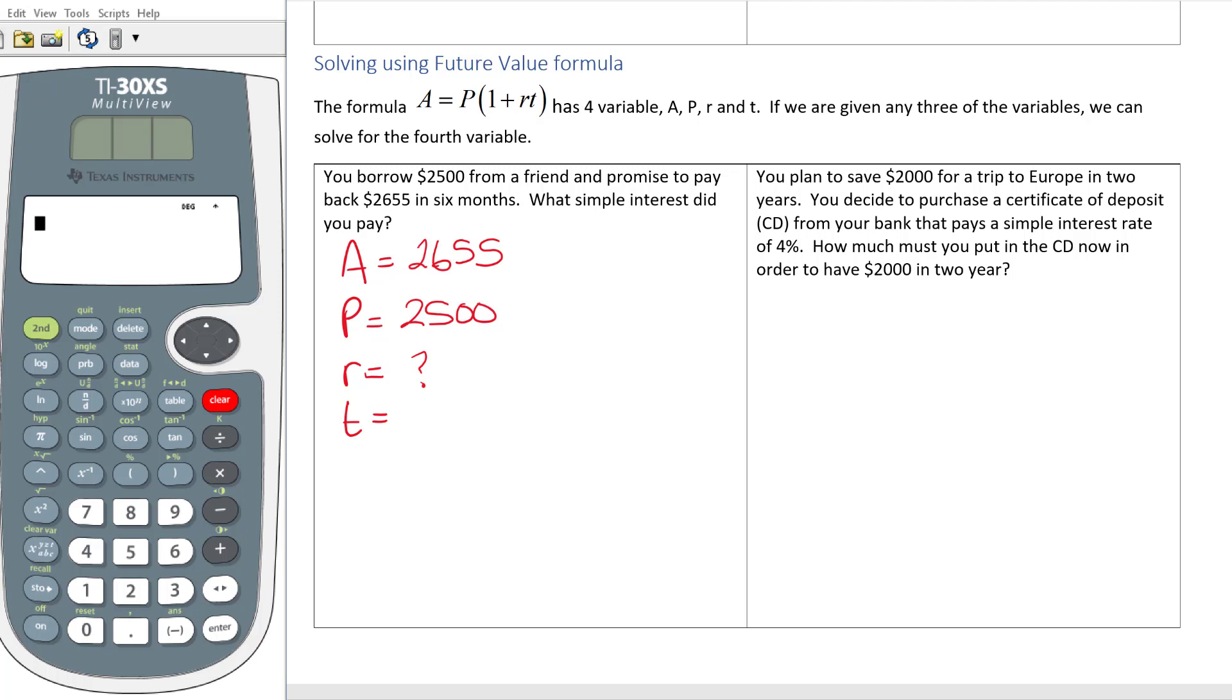And then T is for time. It says in six months, so six months. I take that over 12 months because there's 12 months in a year and time has to be given in years. Six over 12 reduces to one half, so one half of a year.